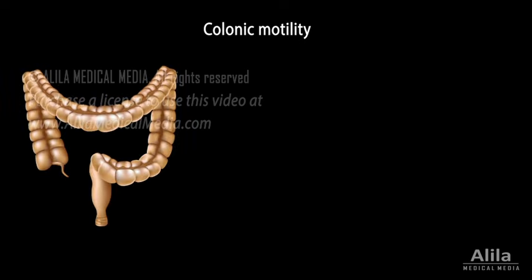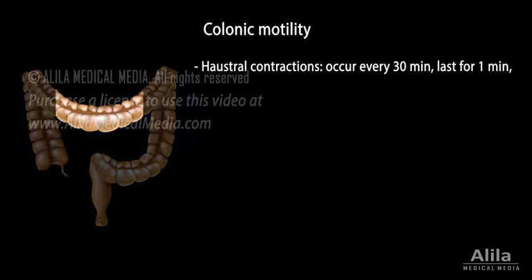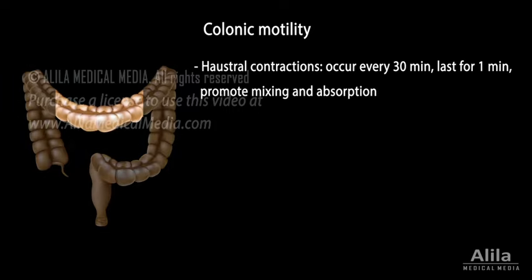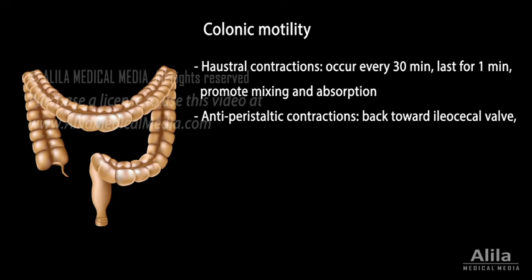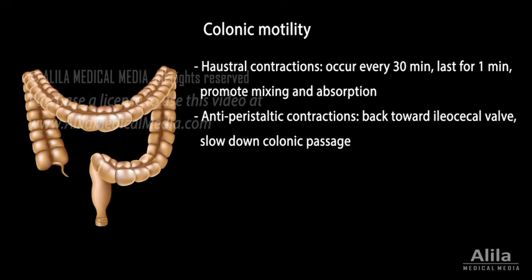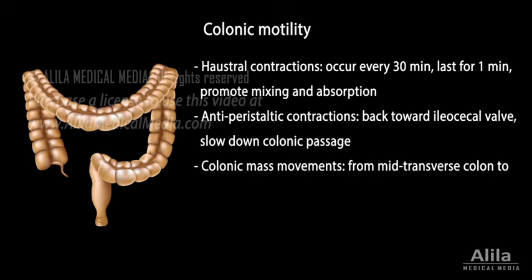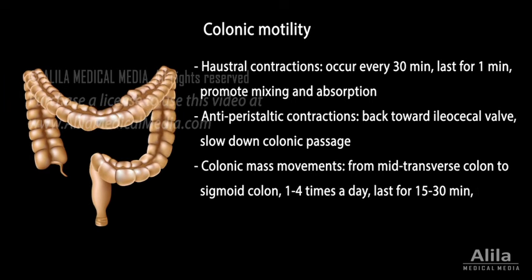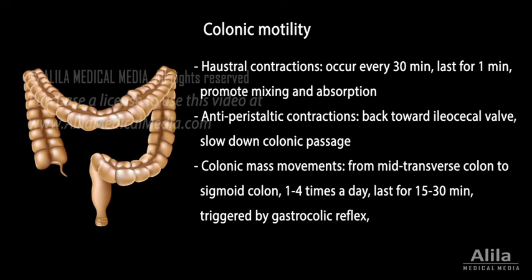There are several types of motility in the colon. Most common are hostral contractions, in which a hostrum distends, contracts, and pushes its content into the next hostrum. These movements occur about every 30 minutes, last for about 1 minute, and help promote mixing and absorption. Anti-peristaltic contractions move food residues back toward the ileocecal valve, thus slowing down their passage through the colon. Then there are colonic mass movements, which are strong waves occurring from mid-transverse colon to the sigmoid colon. They can happen up to 4 times a day, often during or immediately after meals, and last for up to 30 minutes. Mass movements are triggered by the gastrocolic reflex, in which distention of the stomach increases colon motility.